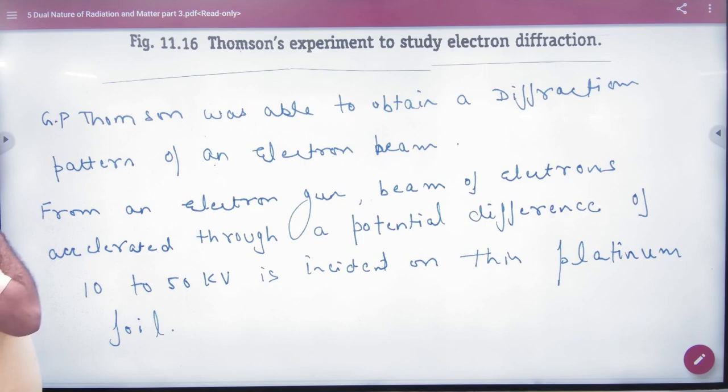So it has been explained that G.P. Thomson was able to obtain a diffraction pattern of an electron beam from an electron gun. The beam of electrons accelerated through a potential difference of 10 to 50 kV.